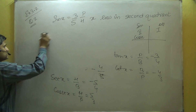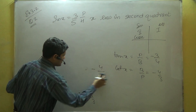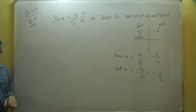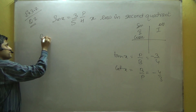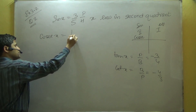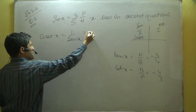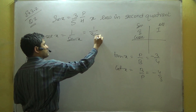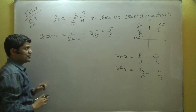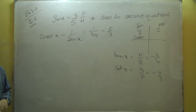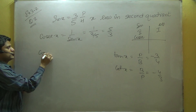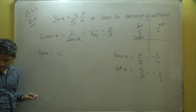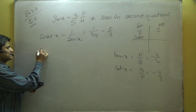This is our other method. If I don't want to draw a triangle, there is another option. First, I have sin x, and I write its reciprocal: cosec is nothing but 1 over sin x, so cosec equals 5 over 3. Now I have sin and cosec. Next I need to find cos, using the identity cos squared plus sin squared equals 1.